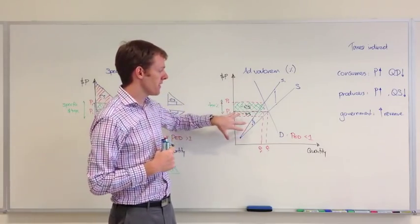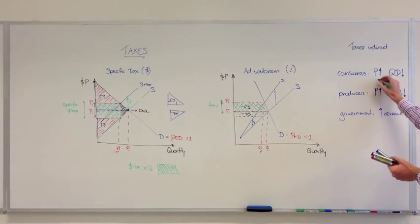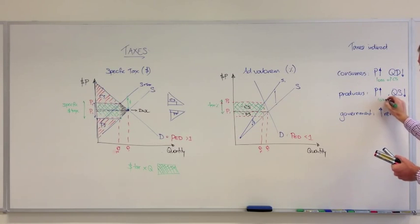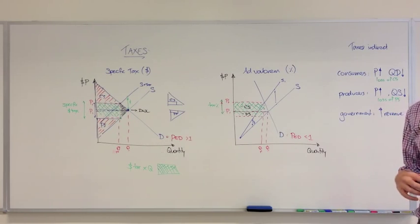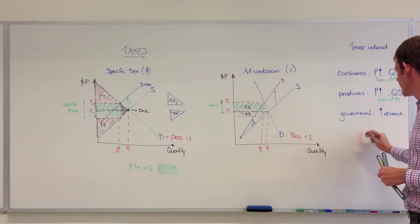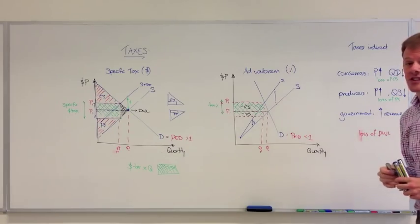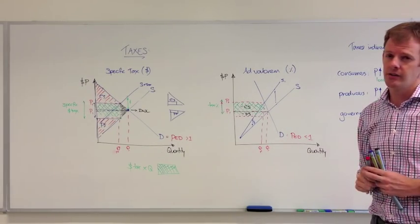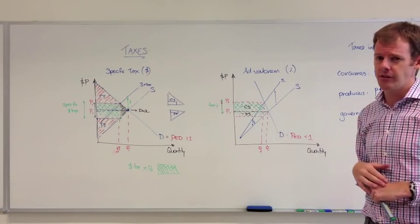When we start talking about this loss of consumer and producer surplus, then we start into the evaluation aspects of taxes. And the final evaluation is the loss of efficiency because the tax is an allocative loss. So I hope that summarizes taxes kind of quickly and provides a good basis for the start of this topic.